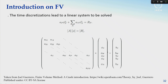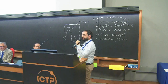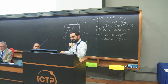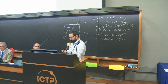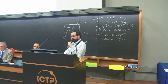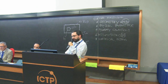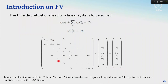We end up with a linear system expressed as a sparse matrix. The coefficients are related to the topology of your mesh — if you have a structured mesh (good quality), you will also have a well-structured matrix, improving the numerical properties of your system.